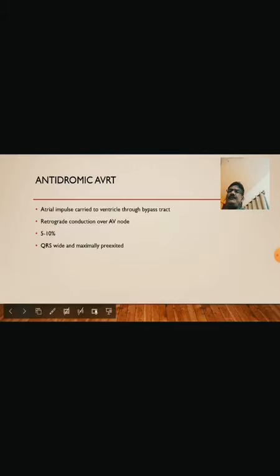In 5% of patients, what is known as antidromic AVRT can occur. The atrial impulse is carried to the ventricle through the bypass tract, and retrograde conduction happens over the AV node — the exact reverse of orthodromic AVRT. Fortunately, it is seen in only 5–10% of patients, and the QRS is wide and maximally pre-excited.